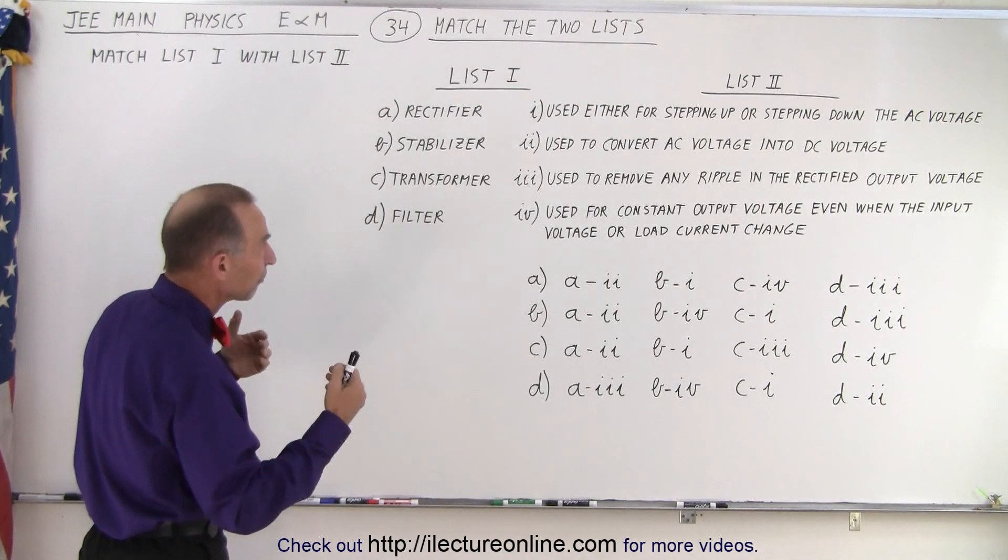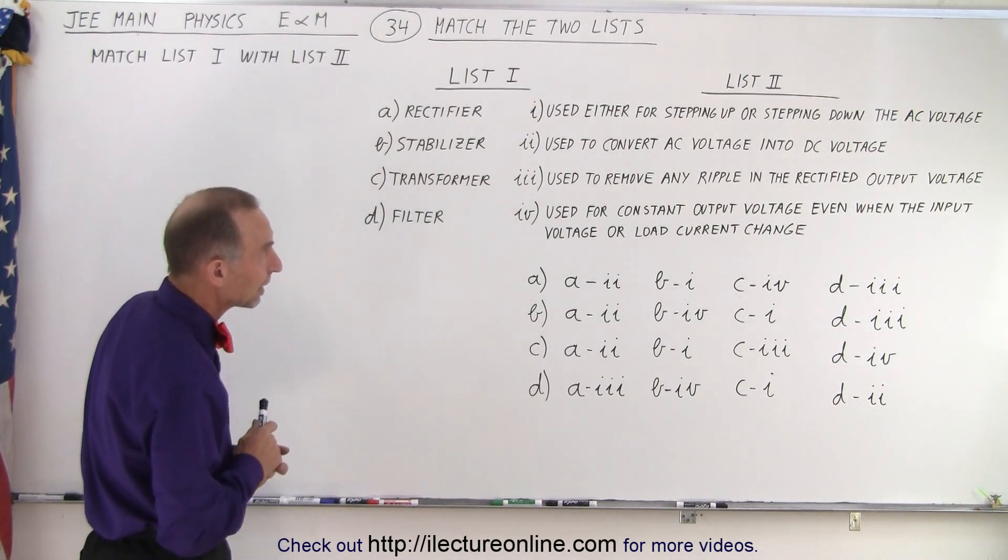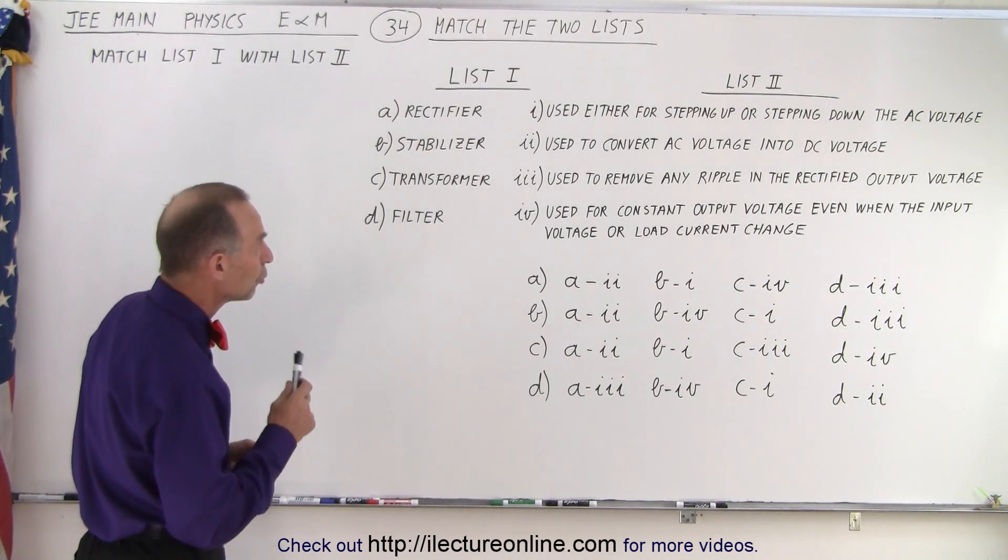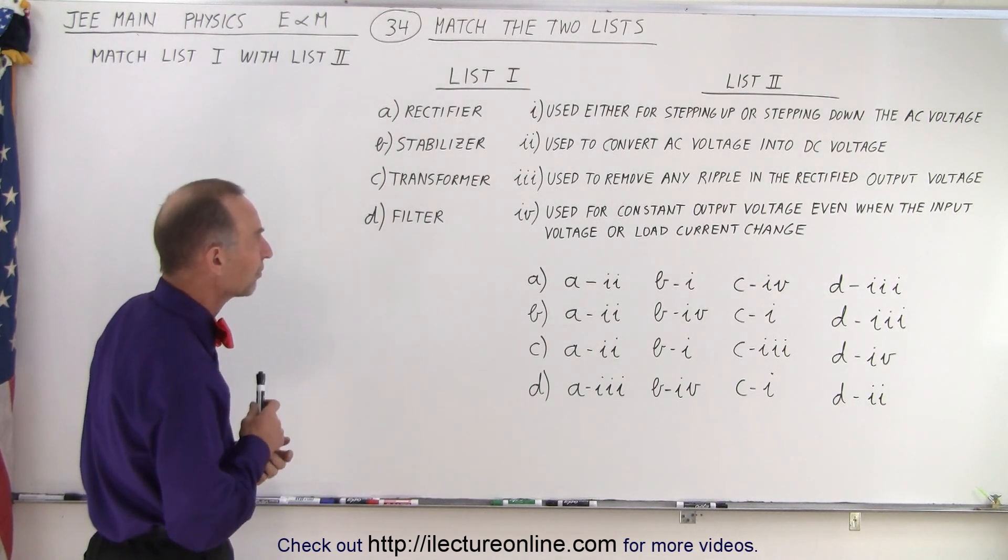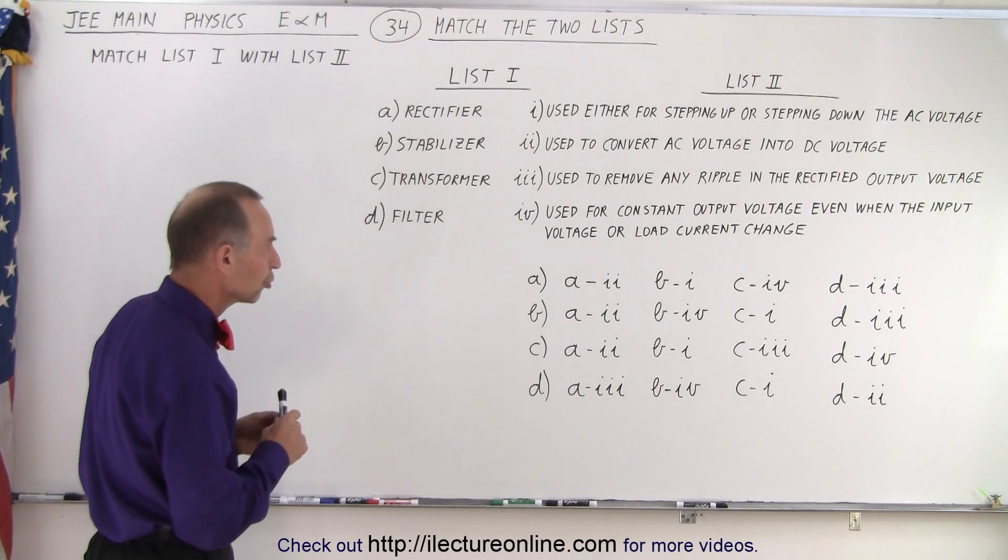And then list two has the functions of these mixed up. Used either for stepping up or stepping down the AC voltage. Used to convert AC voltage into DC voltage. Used to remove any ripple in the rectified output voltage. And used for constant output voltage even when the input voltage or load current change.